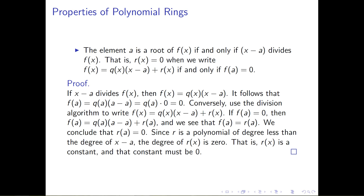Let's walk through the proof of this equivalence. First, suppose that x minus a divides f of x. That means f of x equals some polynomial q of x multiplied by the quantity x minus a, with no remainder term. We want to show that a is a root of f, i.e., plugging a into f results in zero. Plugging a into f gives q of a times the quantity a minus a. Since a minus a equals the additive identity zero, and multiplying any ring element by zero gives zero, we've shown that f of a equals zero.